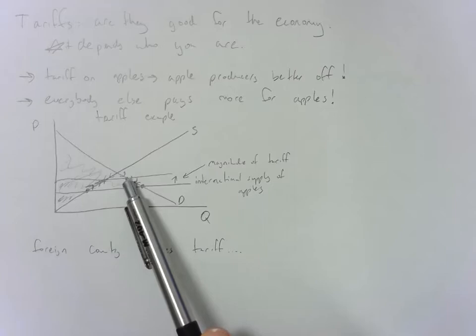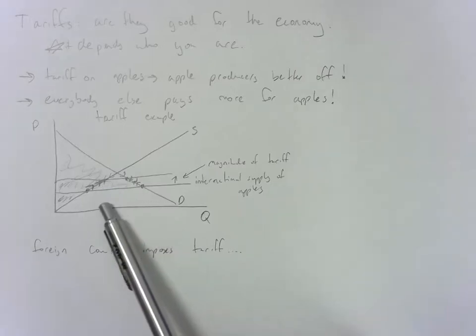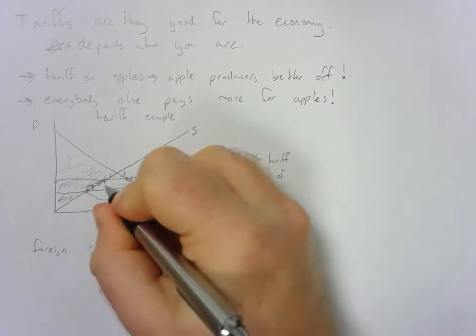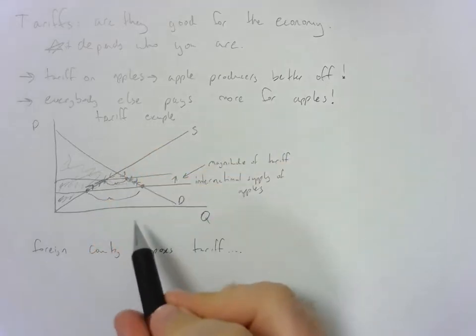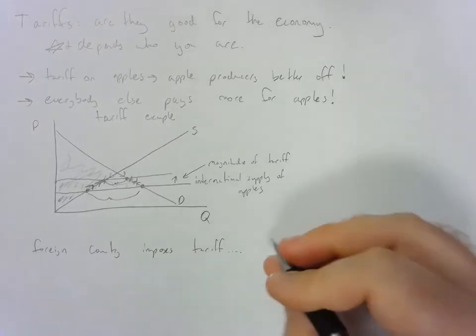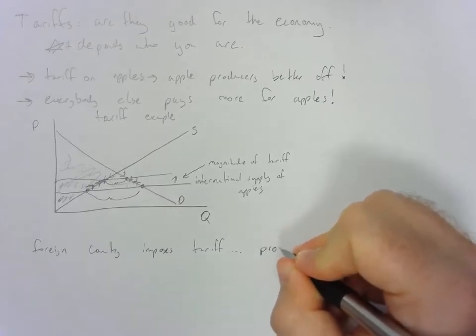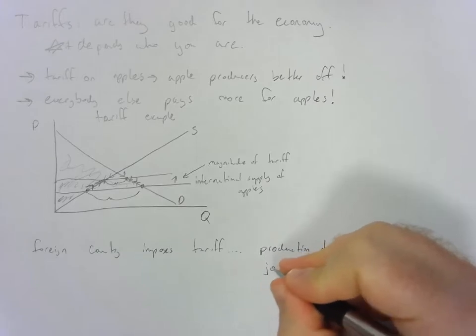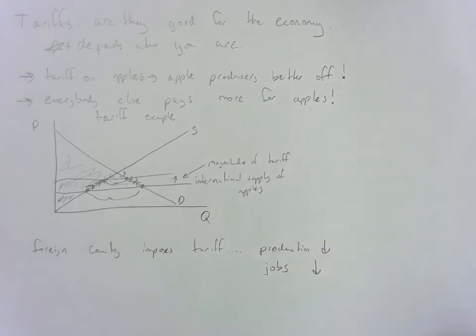you can see that the amount of foreign apples being imported used to be this amount, and now it's only this amount. So what happens to all those extra apples? Well, that means the foreign countries producing those apples don't produce them anymore. The amount of their quantity supplied goes down, and that means they produce less. So production goes down, and the jobs in that particular sector go down.